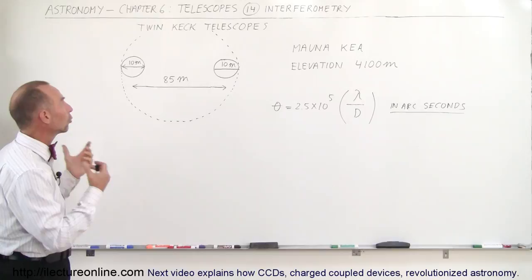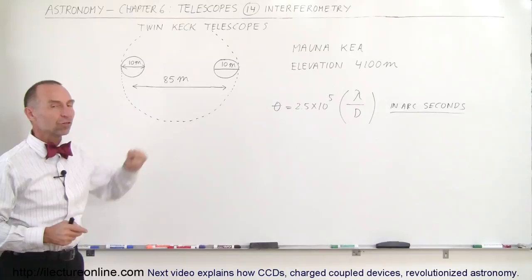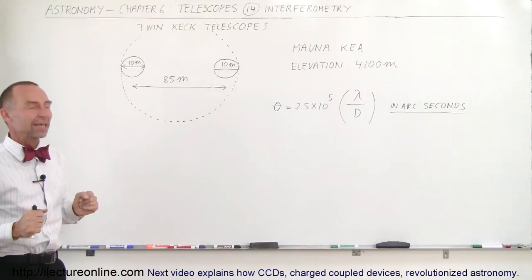The reflecting mirrors are 10 meters in diameter—enormous in size—and they're 85 meters apart. The way that works is it works as if you have a single telescope that has an aperture or a lens, what we call the objective, of 85 meters in diameter.